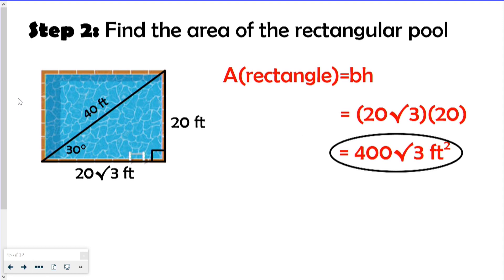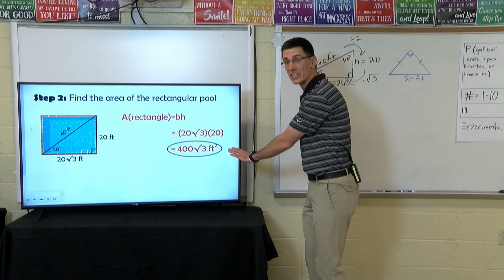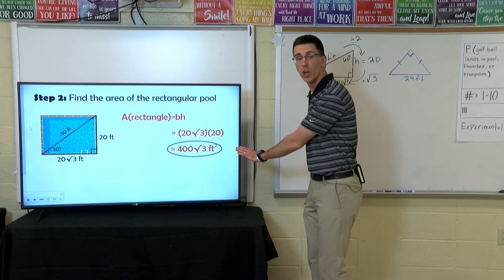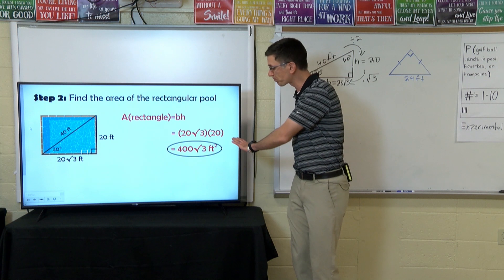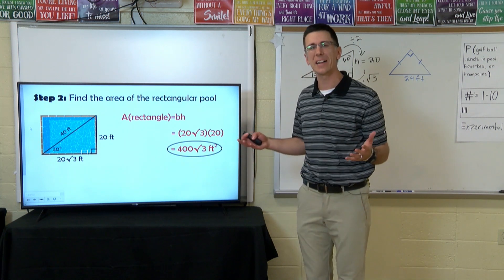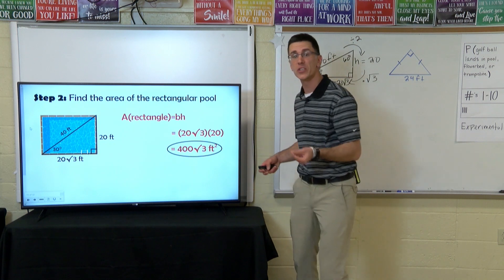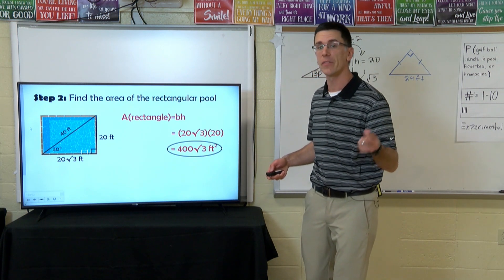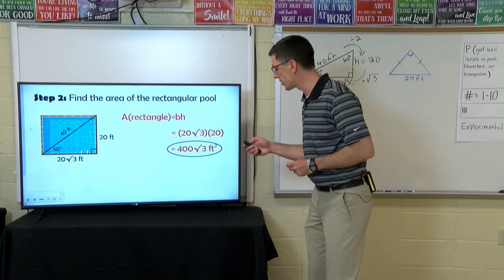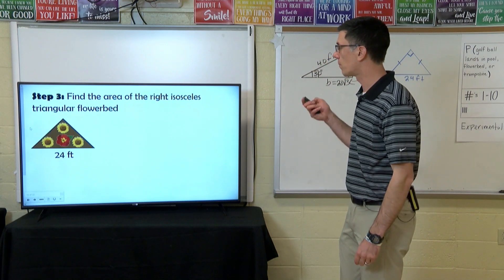Area is base times height. When we multiply 20 square root of 3 times 20, that produces an area of 400 square root of 3 feet squared. We're going to leave it in simplified radical form because we want an exact answer. The earlier we round, the less precision and accuracy we have in the final answer. Now let's move on to the area of the right isosceles triangular flower bed.